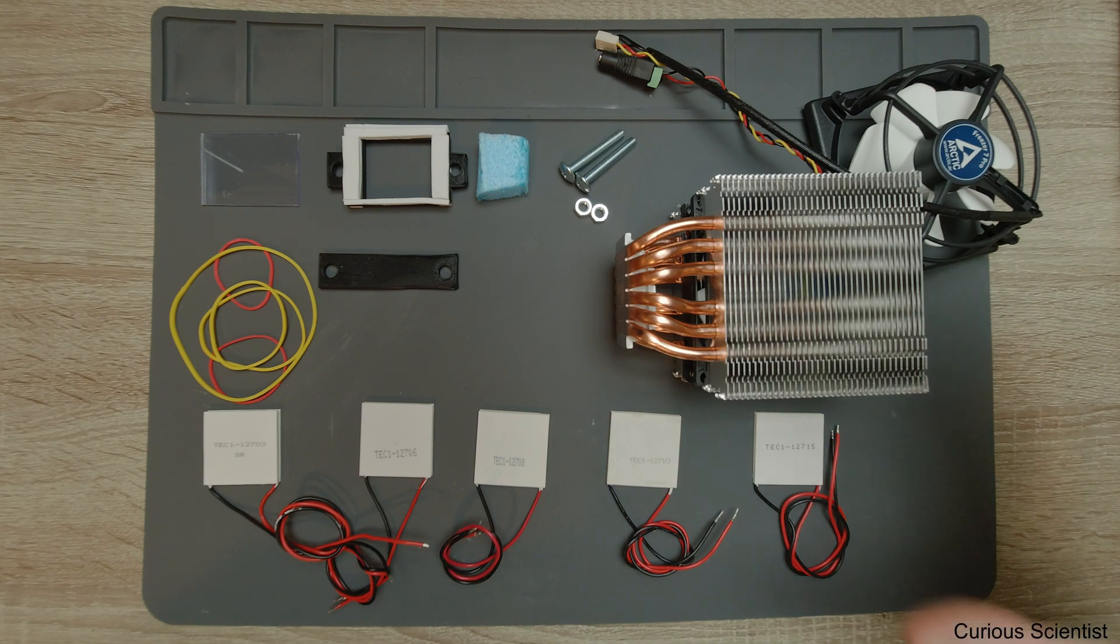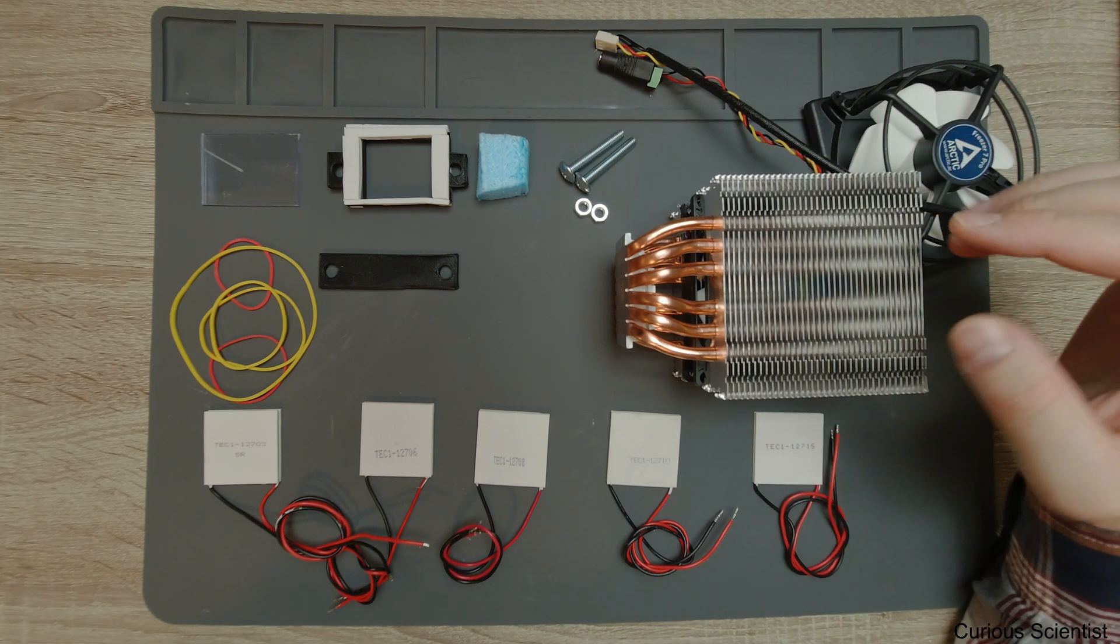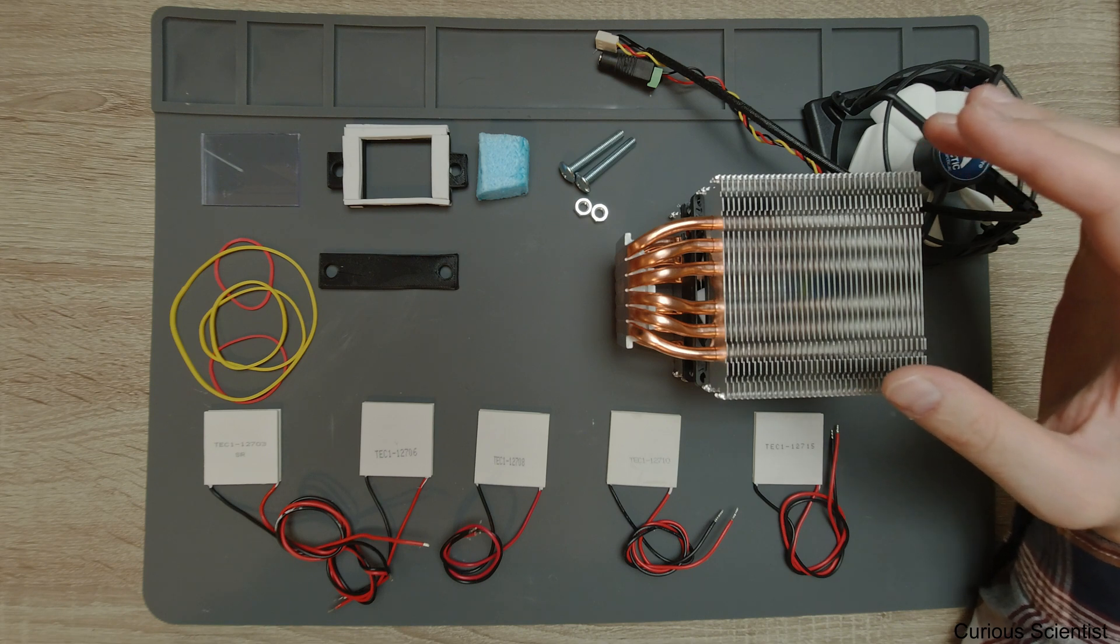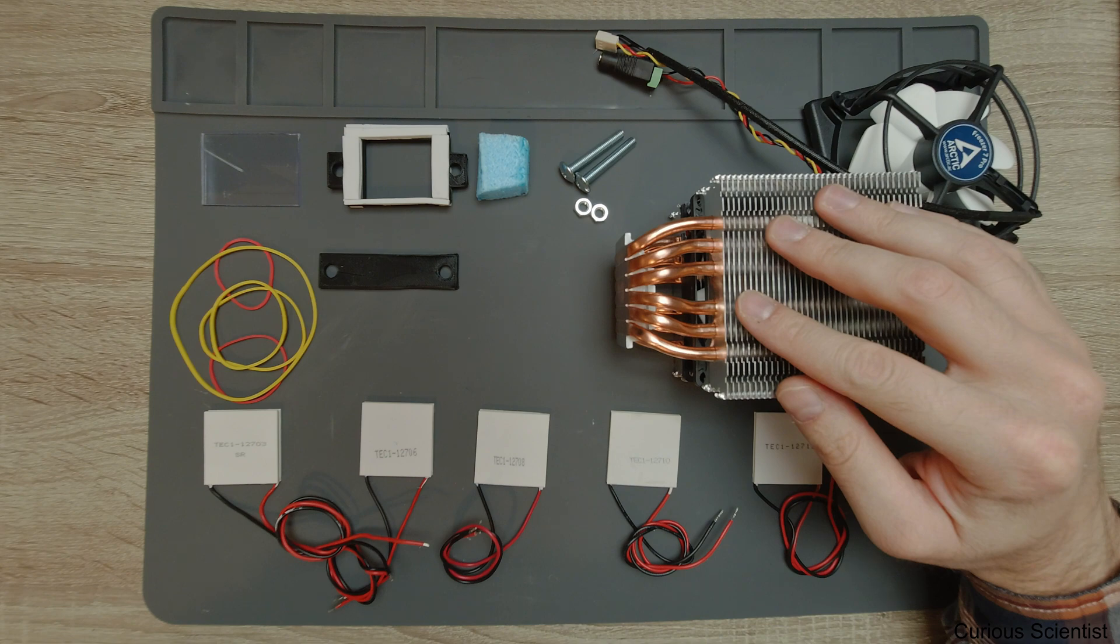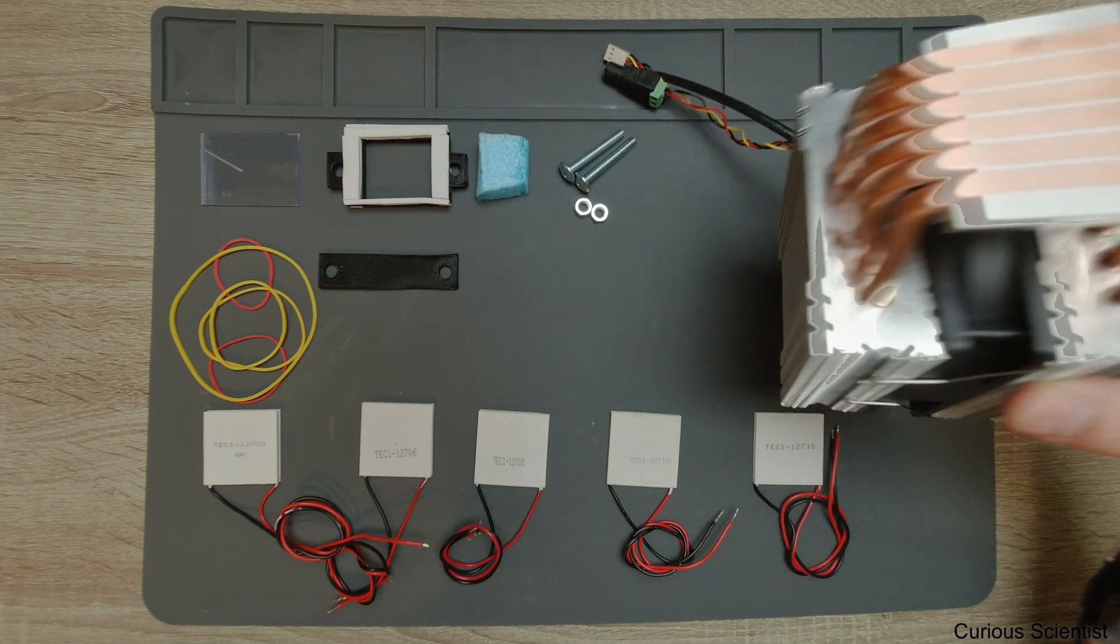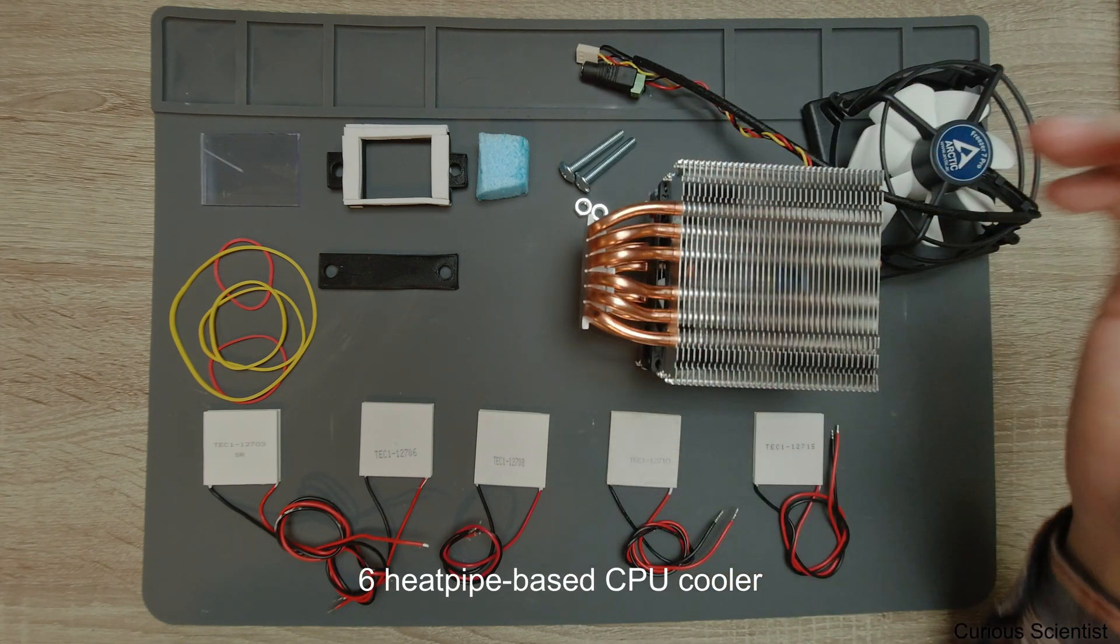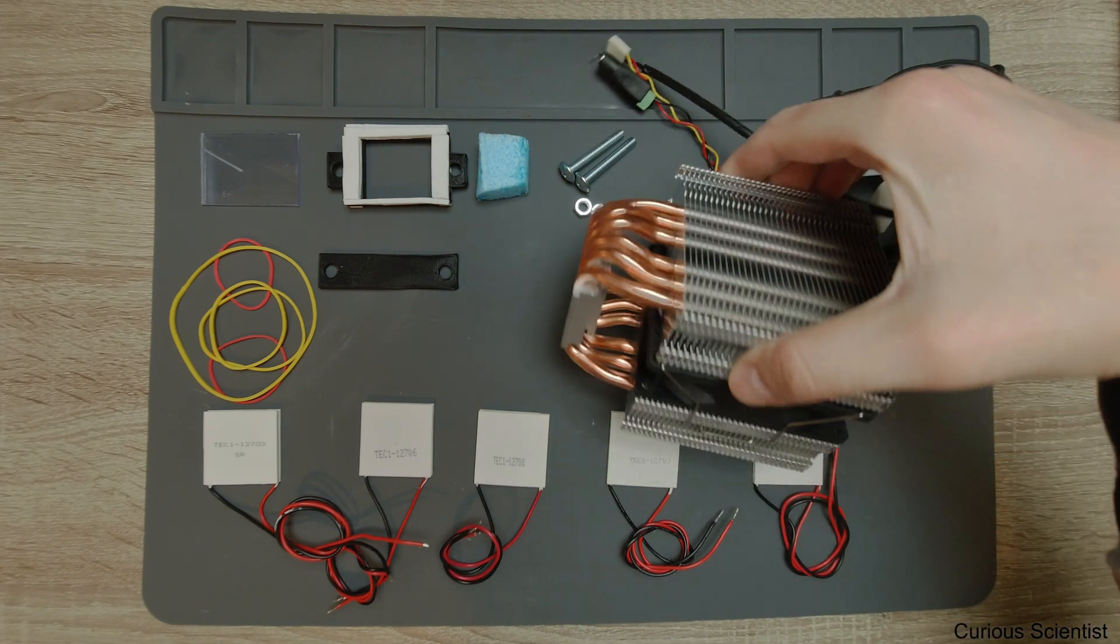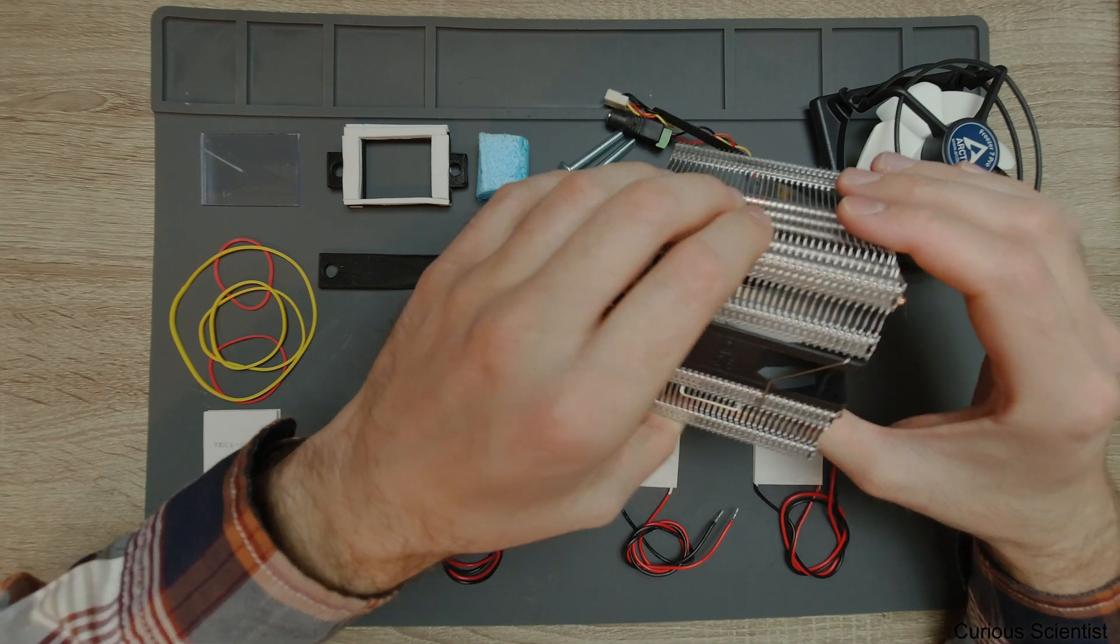First of all, instead of using water cooling as I did in many of my previous videos, I'm going to use a CPU cooler. This is a really simple heatsink and heat pipe based cooler with a nine centimeter fan in the middle which is blowing the air in this direction.